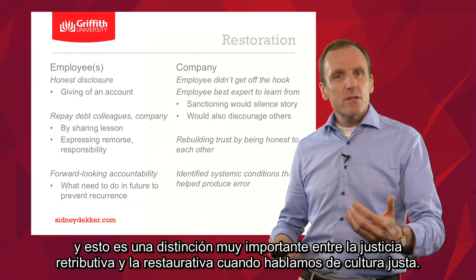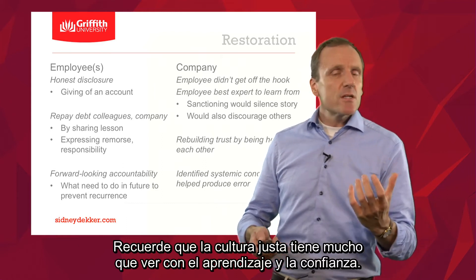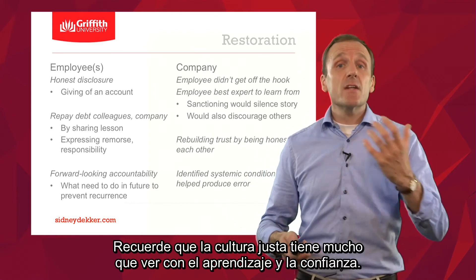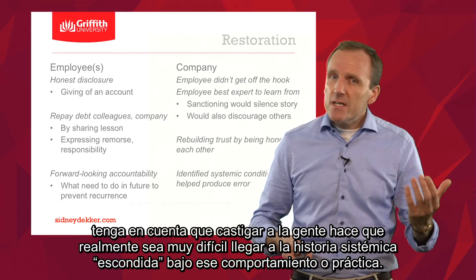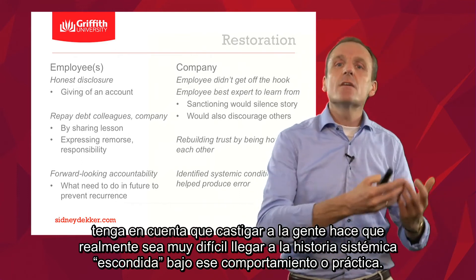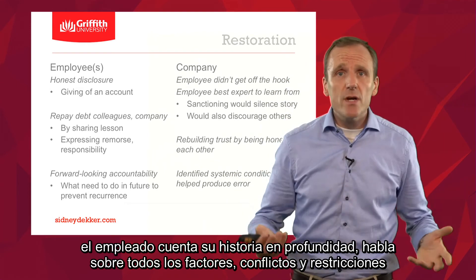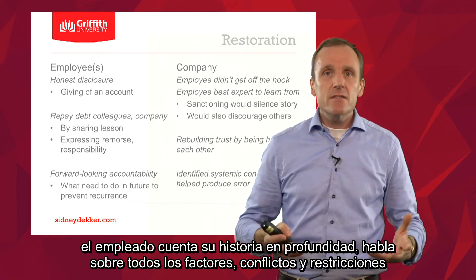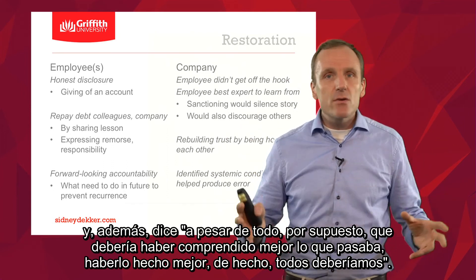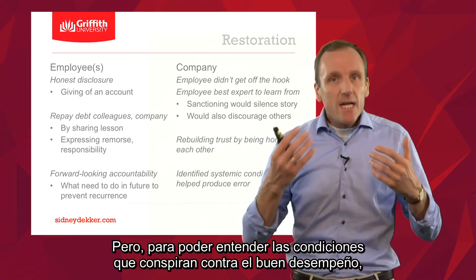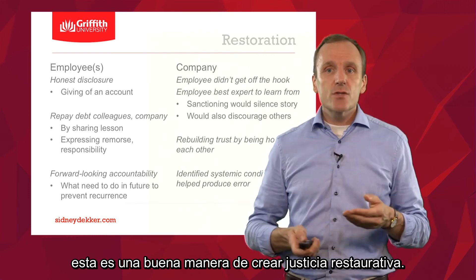That's a very important distinction between retribution versus restoration in your just culture. A just culture is very much about learning and trust. If you want to learn, punishing people makes it very difficult to get to the systemic story underneath the performance. Whereas here, you get that second story — the deeper story about all the factors, goal conflicts, and constraints. And on top of that, he says: 'Despite all of that, of course I should have known better, done better. Absolutely.' But getting an understanding of the conditions that conspire against good performance is one way of creating restorative justice.